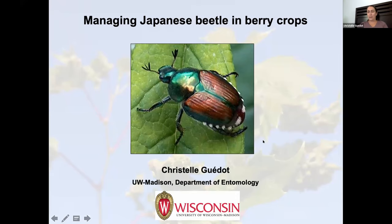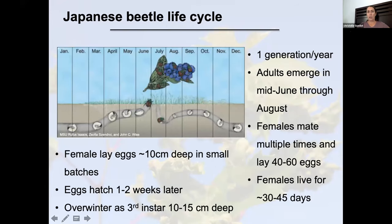Transitioning to managing Japanese beetle in berry crops. I'm Christelle Guido, food crop entomologist and extension specialist at UW Madison. Japanese beetle has a one-generation-per-year life cycle. They emerge usually around Father's Day in Wisconsin and are emerging all the way through August. They can mate and lay eggs multiple times — about 40 to 60 eggs daily — and live for about 30 to 45 days over the summer.